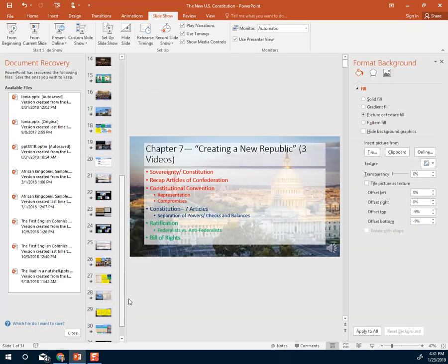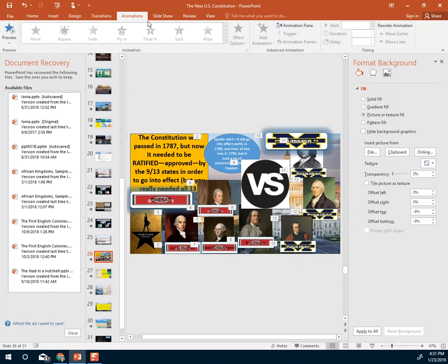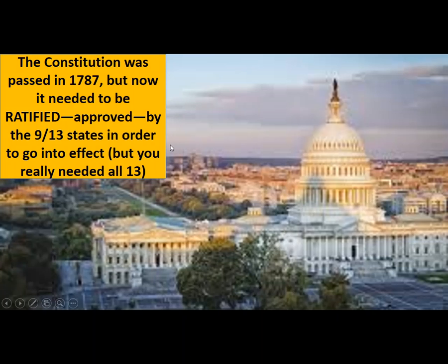We talked about what was actually in the Constitution earlier. The Constitution was passed back in the Constitutional Convention in 1787, but now it needed to be ratified — meaning approved by at least 9 out of the 13 states in order to go into effect. The Constitution actually says this: you need to get at least 9 out of the 13.